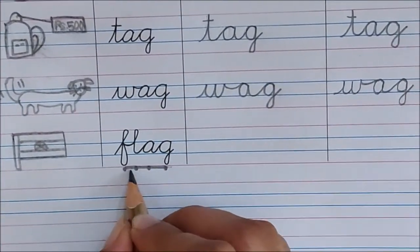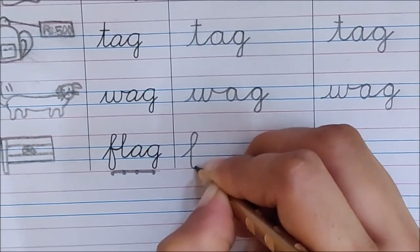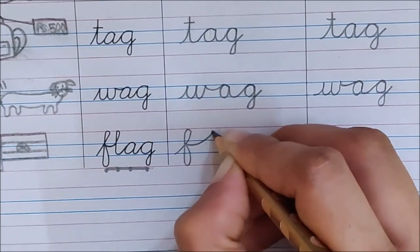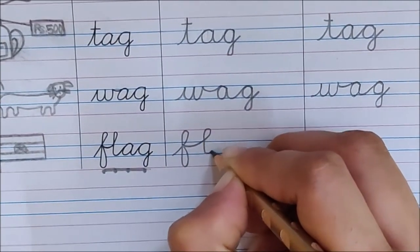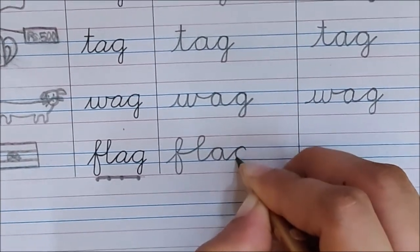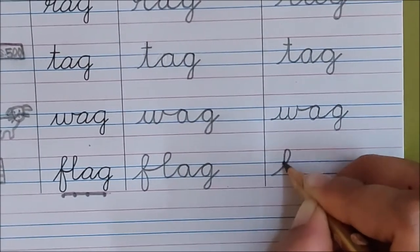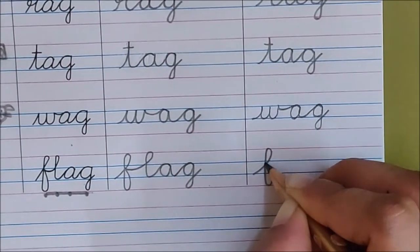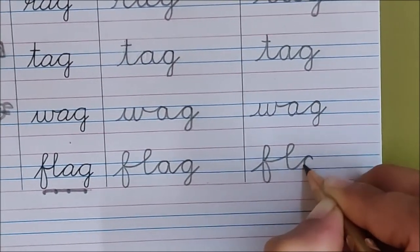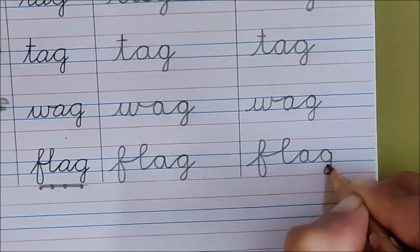The last word. F, L, A, G, flag. So write down. F, children. Now take the smiley of F up. Take it long. L, A, G, flag. F, take the smiley up, loop behind. L, A, G, flag.